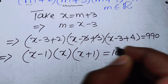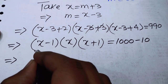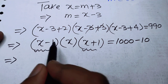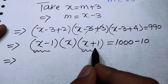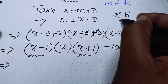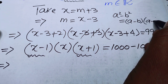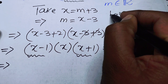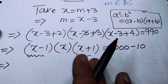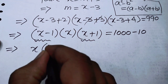We write 990 as 1000 minus 10. Then we combine the terms: (x minus 1) and (x plus 1) and apply the famous identity a squared minus b squared equals (a minus b)(a plus b).